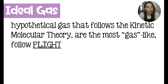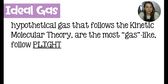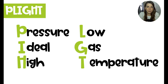A gas that follows all five of those postulates would be called an ideal gas. This is a hypothetical gas because we know these assumptions aren't really true — we just assume them so we can avoid calculus. That hypothetical gas follows the rules of the kinetic molecular theory. These gases are the most gas-like and they follow PLITE, which is an acronym. PLITE stands for: Pressure — Low — Ideal gas — high Temperature.